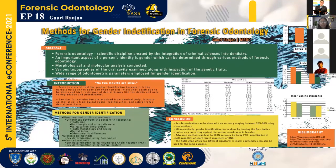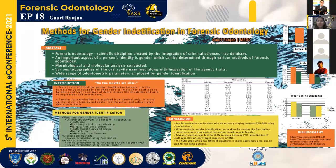The width of mandibular canine along with the intercanine distance was also greater in males. Dental index, the next subcategory, uses tooth proportions for differentiating between the sexes. The mandibular canine index formula gives a value of 7.1, meaning 7.1 mm is the maximum possible mesiodistal dimension of mandibular canines in females, whereas the same dimensions are greater in males. Odontometric differences can be explained by the fact that there is greater genetic expression in males than females.